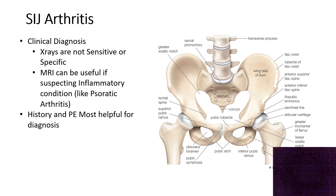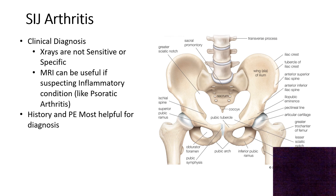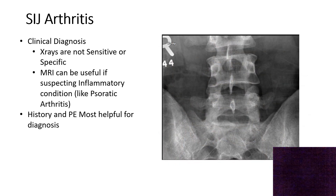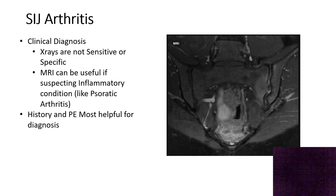Finally, sacroiliac joint arthritis: this one is really tough. X-rays are not necessarily helpful to diagnose it. MRIs can be helpful if there's suspicion of an inflammatory condition like psoriatic arthritis or rheumatoid arthritis, but otherwise MRIs are also not very helpful for diagnosing SI joint arthritis. Most commonly it is diagnosed with history and physical exam. The history may be very similar to lumbar facet arthritis — things like extension can cause pain there.